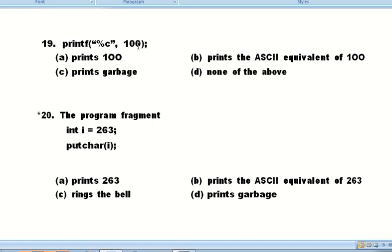Question number nineteen: The code printf percent c, 100 - this prints the ASCII equivalent of 100. Option C is correct.